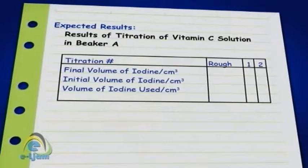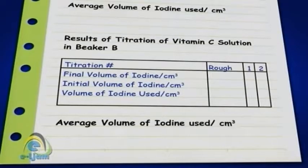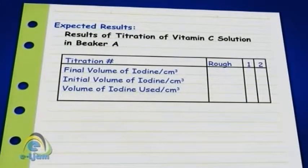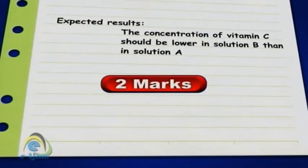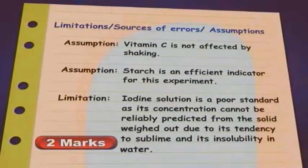Expected results: data to be collected clearly represented. Type of data collected, whether qualitative and/or quantitative, should be apparent. If results are to be tabulated, an example of the results table should be presented. If results are to be presented graphically, a sketch of the graph is expected: 2 marks. Clearly stated expected results in qualitative terms, reasonable and based on current knowledge: 2 marks. Clearly stated interpretation of predicted results that ideally supports or rejects the hypothesis: 2 marks. Limitations, assumptions, sources of error — any two scientifically sound examples: 2 marks.